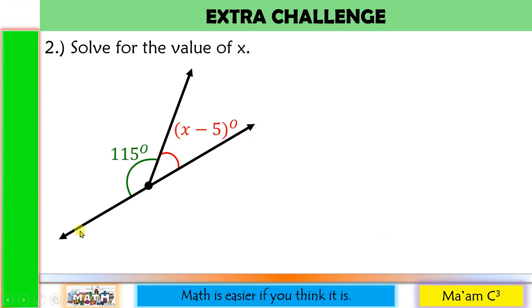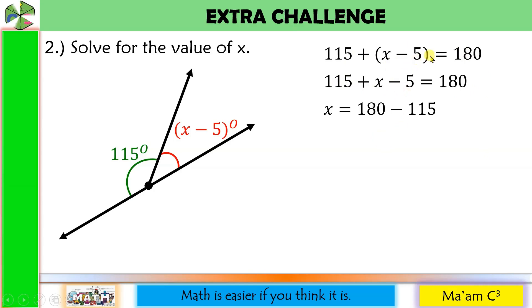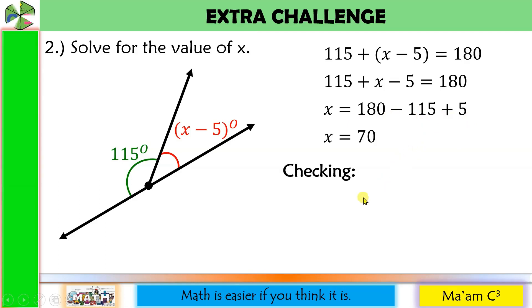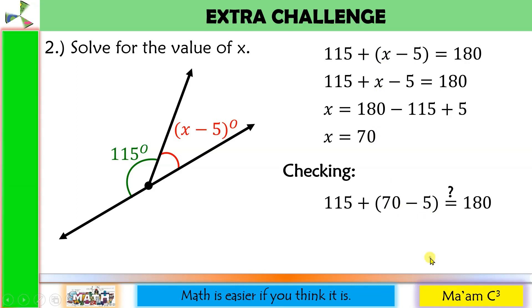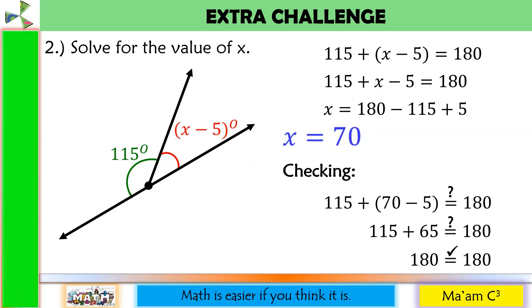Number 2: This is a straight line, creating 180 degrees. To solve for X, we add the measurements of these two angles and equate to 180. Removing parentheses and moving 115 to the other side gives minus 115; negative 5 becomes plus 5. 180 minus 115 is 65, plus 5 equals 70. Checking by substitution: 70 minus 5 is 65, and 115 plus 65 is 180. They are equal. Therefore, X equals 70 is correct.